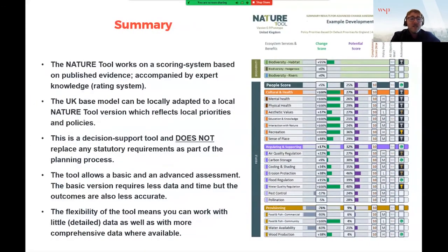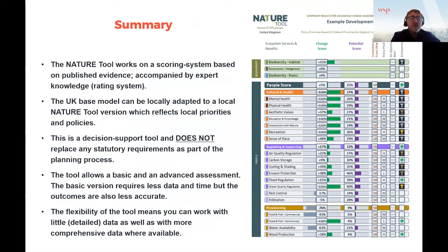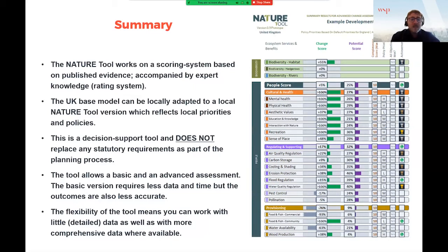To summarise: the Nature Tool works on a scoring system based on published evidence accompanied by expert knowledge — a rating system. The UK-based model can be locally adapted to reflect local priorities and objectives. This is a decision support tool and does not replace any statutory requirements, but can inform the planning process. The tool allows basic and advanced assessment — the basic version requires less data and time but outcomes are less accurate, more suitable for early stages. Most of the data informing the tool is available in the public domain, and links are provided within the tool and accompanying guidance.